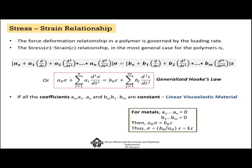This generalized Hooke's law can be written in a more compact manner with a0·sigma separately and then the rest of the terms, and similarly b0·epsilon separately. If all coefficients a0 through an and b0 through bm are constant, then the material is a linear viscoelastic material. For certain polymers, called standard linear solids, these parameters remain constant.